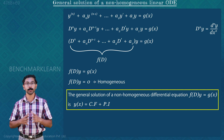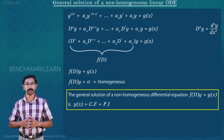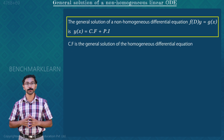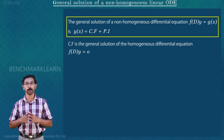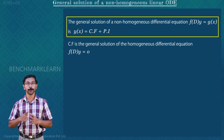Our aim is to find the complementary function and the particular integral. For finding the complementary function, we use the homogeneous differential equation f(D) · y = 0. The CF is the general solution of this homogeneous equation. Since the differential equation contains constant coefficients, we can use the characteristic equation — methods covered in the first module. For the particular integral, we are going to learn new methods in the upcoming sections.